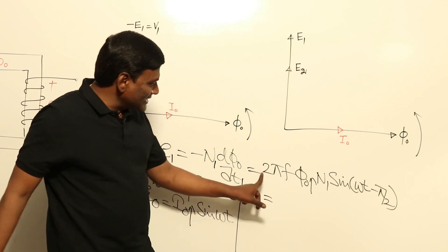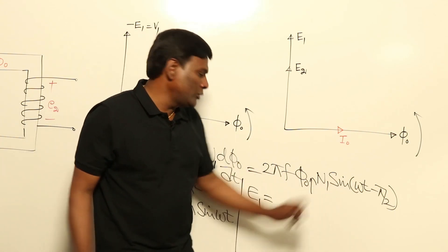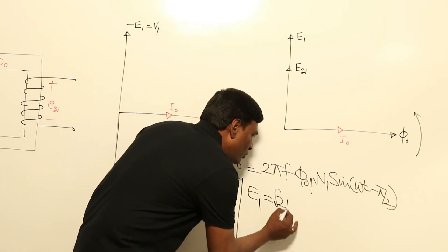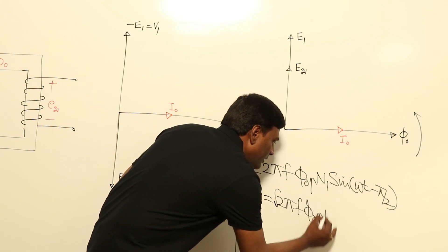Now, for example, if I think of RMS value of primary induced voltage, maximum is going to be this much, so divided by root 2. So this is going to be root 2 π f Φ0 max N1.